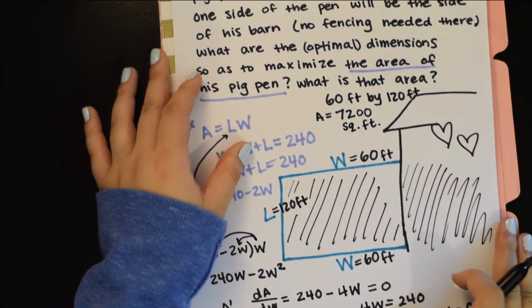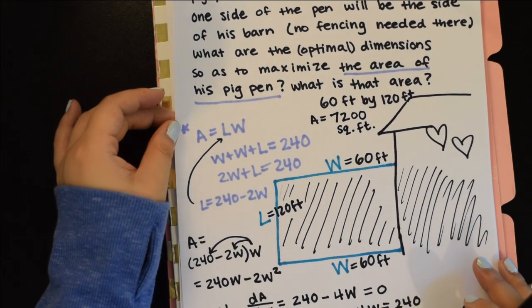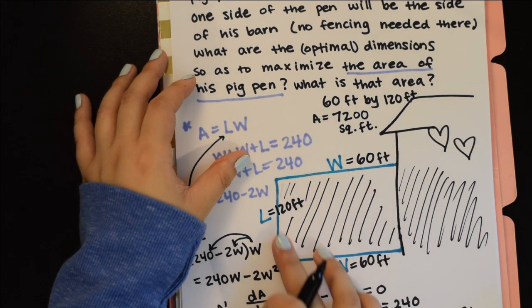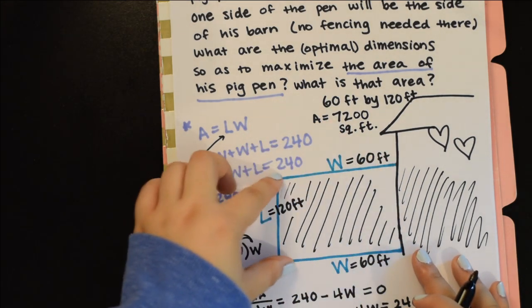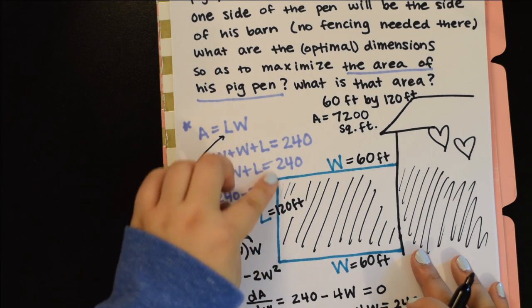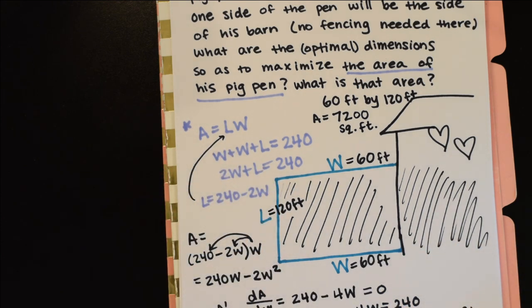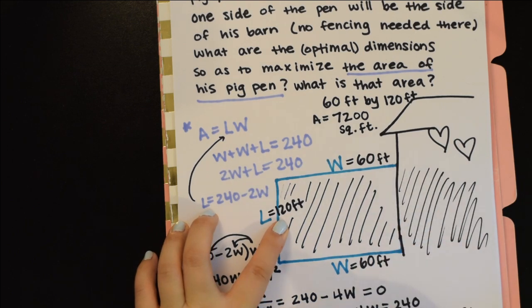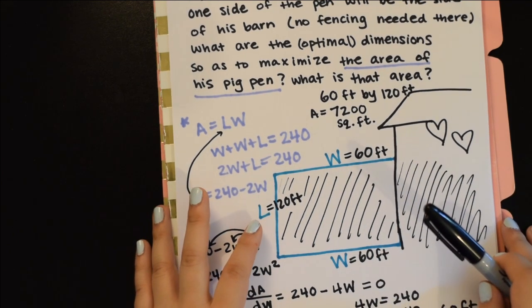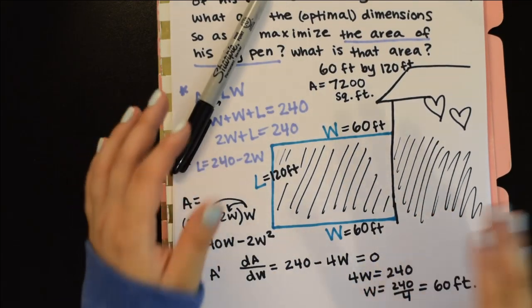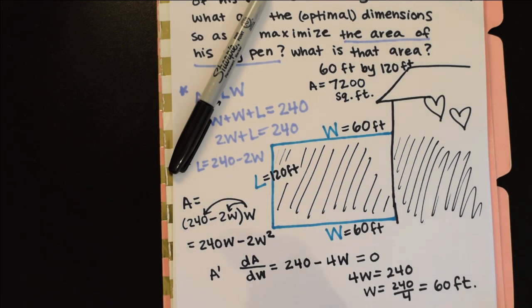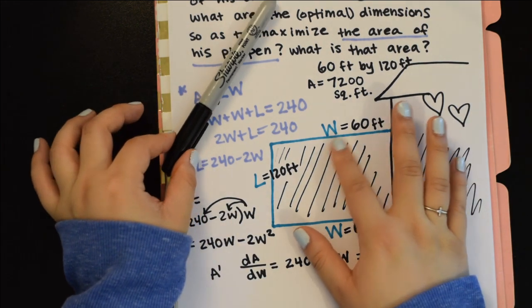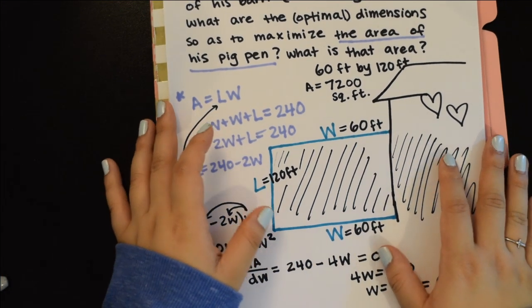One thing that's kind of cool to think about is that if we have two of these W's for our perimeter and one L, it's a neat little thought experiment. Two times 60 is 120 and we have 120, so the ratio kind of holds. With these optimization questions, they pretty much always end up like in something that's like a square of some sort by default.